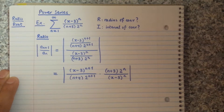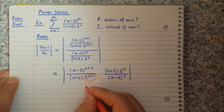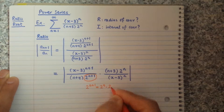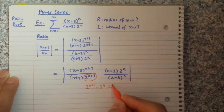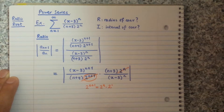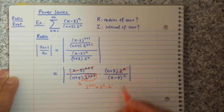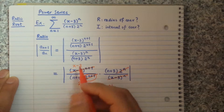Now we look for cancellations. Note that 2^{n+1} is simply 2^n times 2, so the 2^n in the numerator cancels with 2^{n+1} in the denominator, leaving a factor of 2 at the bottom. Also, (x minus 3)^{n+1} cancels with (x minus 3)^n, leaving one factor of (x minus 3) at the top.